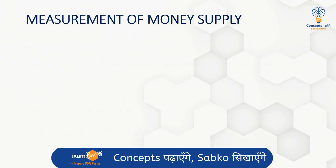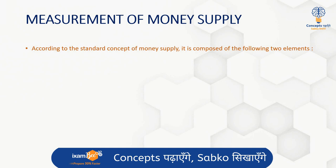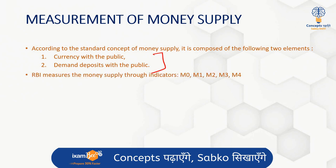How is money supply measured? It is given by several monetary aggregates: M0, M1, M2, M3, and M4. According to the standard concept of money supply, it is composed of two things: the currency with the public and the demand deposits with the public. But the RBI, the central bank, measures money supply through various indicators — M0, M1, M2, M3, M4 — which we will look at in detail.